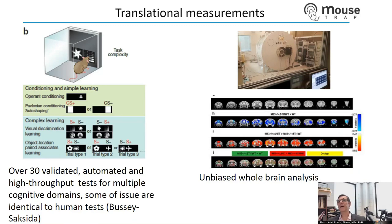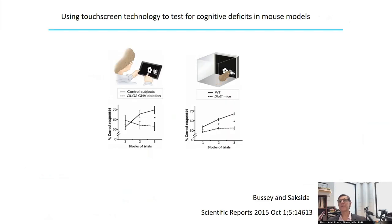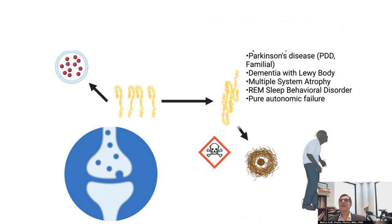The imaging we do includes high-field MRI with unbiased whole-brain analysis. As a quick example, the touchscreen tasks developed for mice are based on the CANTAB battery of tests. My colleagues tested mice with mutations that caused failure in a specific task, then tested humans with the same task. Humans with the same genetic variant also failed in the same way — showing that these tasks are translatable and detect the same changes in cognition.